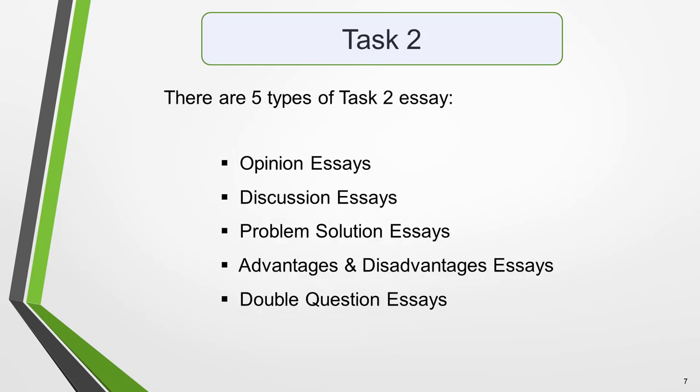For task 2 you must write an essay on a topic of general interest. The essay will be a response to a specific point of view, problem or argument that will be stated in the question. There are 5 types of task 2 essay: opinion essays, discussion essays, problem solution essays, advantages and disadvantages essays, and double question essays. You'll find lessons on each of these via the link in the notes below.